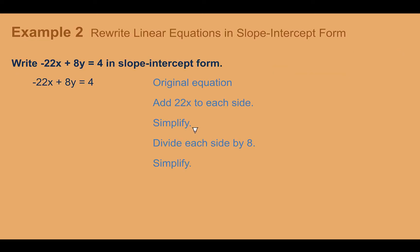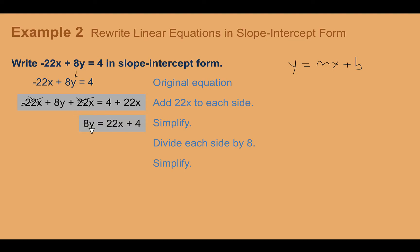Example 2: Write negative 22x plus 8y equals 4 in slope-intercept form. This is written in standard form, not slope-intercept form. We need y equals mx plus b, meaning we solve for y. First, add 22x to both sides — that cancels it off the left and moves it to the right. Then divide both sides by 8. We get y equals 2.75x plus 0.5, or as fractions, 11/4x plus 1/2.